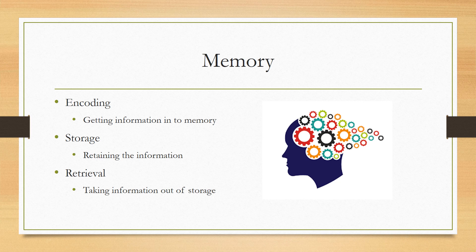Memory is the retention of information over time. Memory is divided into three categories. These categories are encoding, storage, and retrieval. Encoding is getting the information into memory. Storage is retaining the information over time, and retrieval is taking information out of storage.